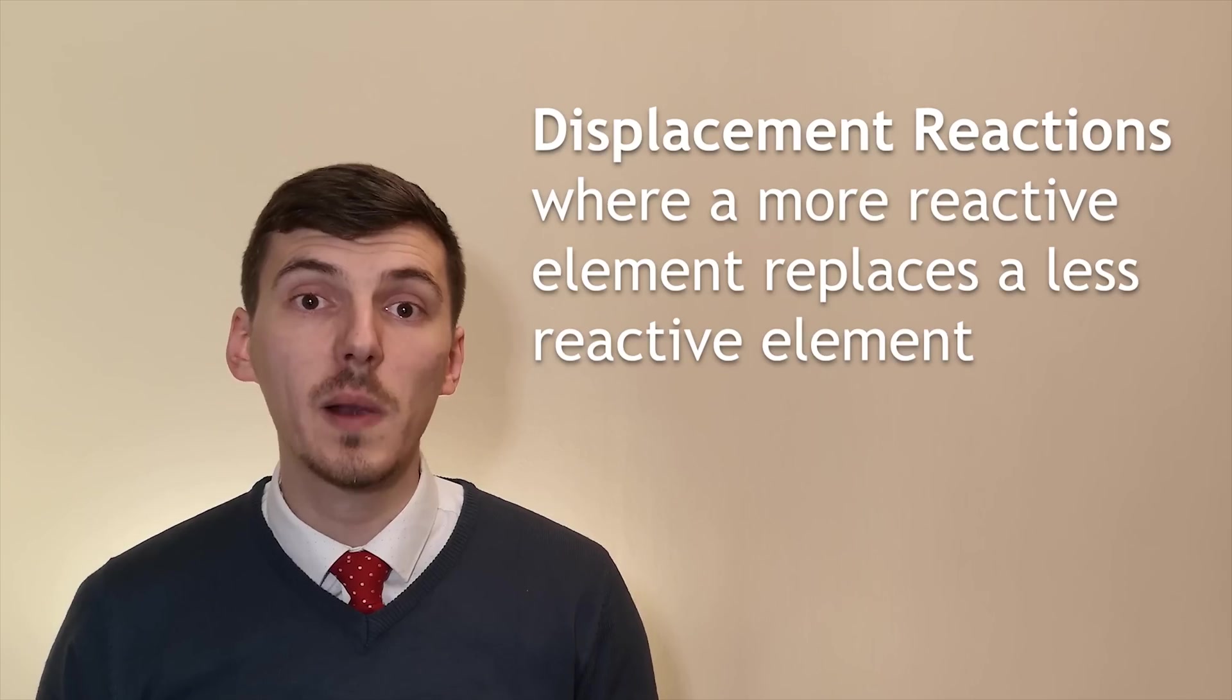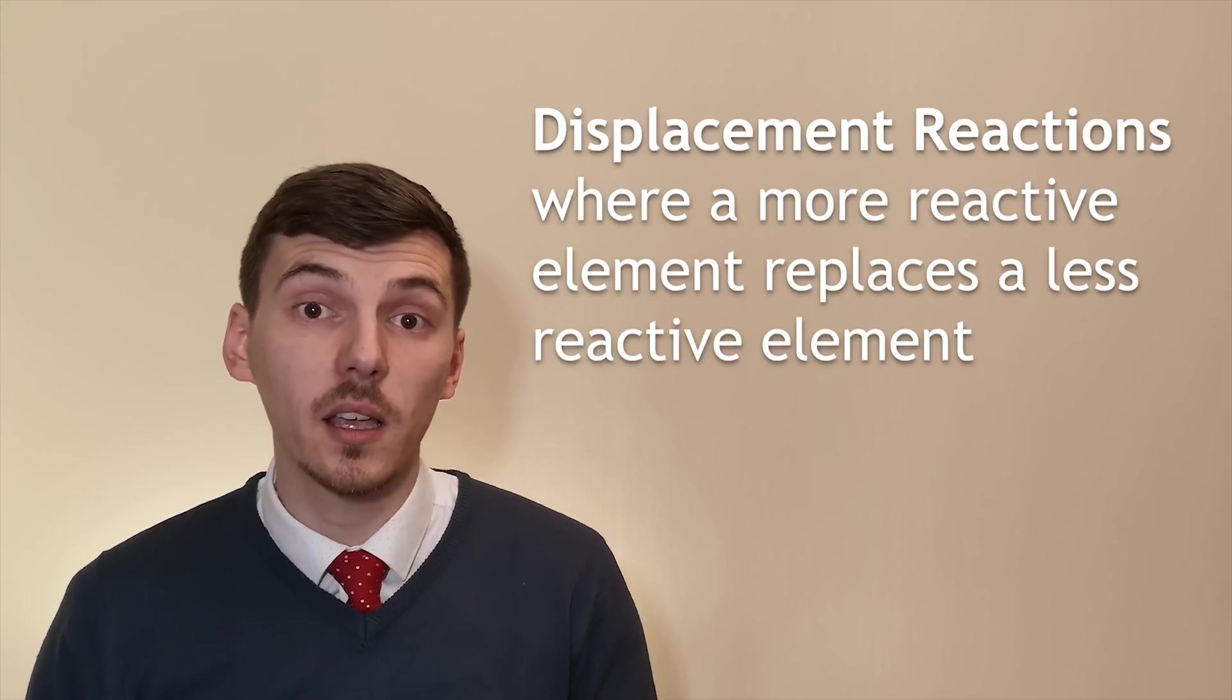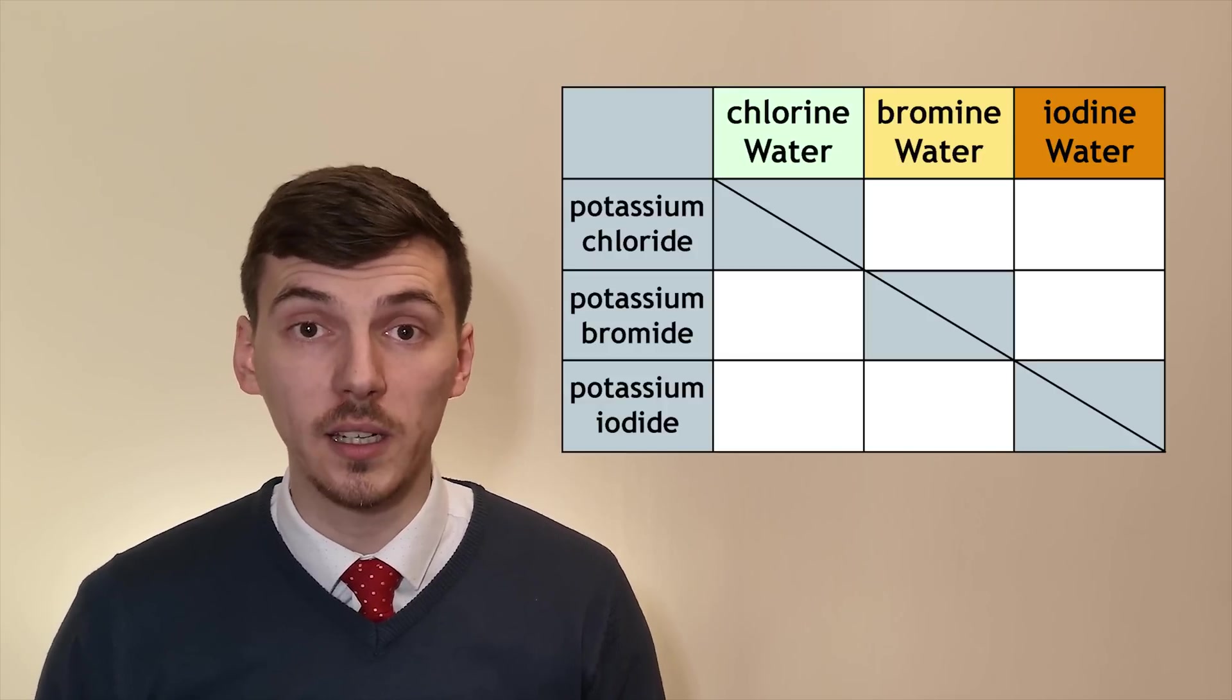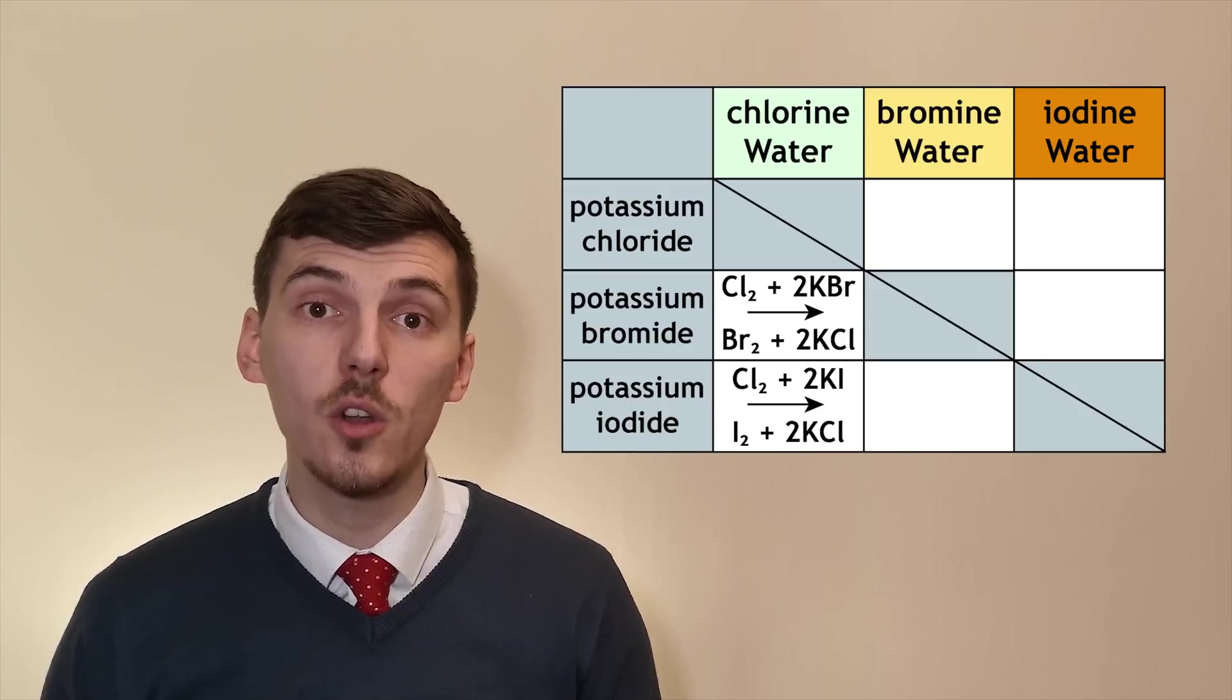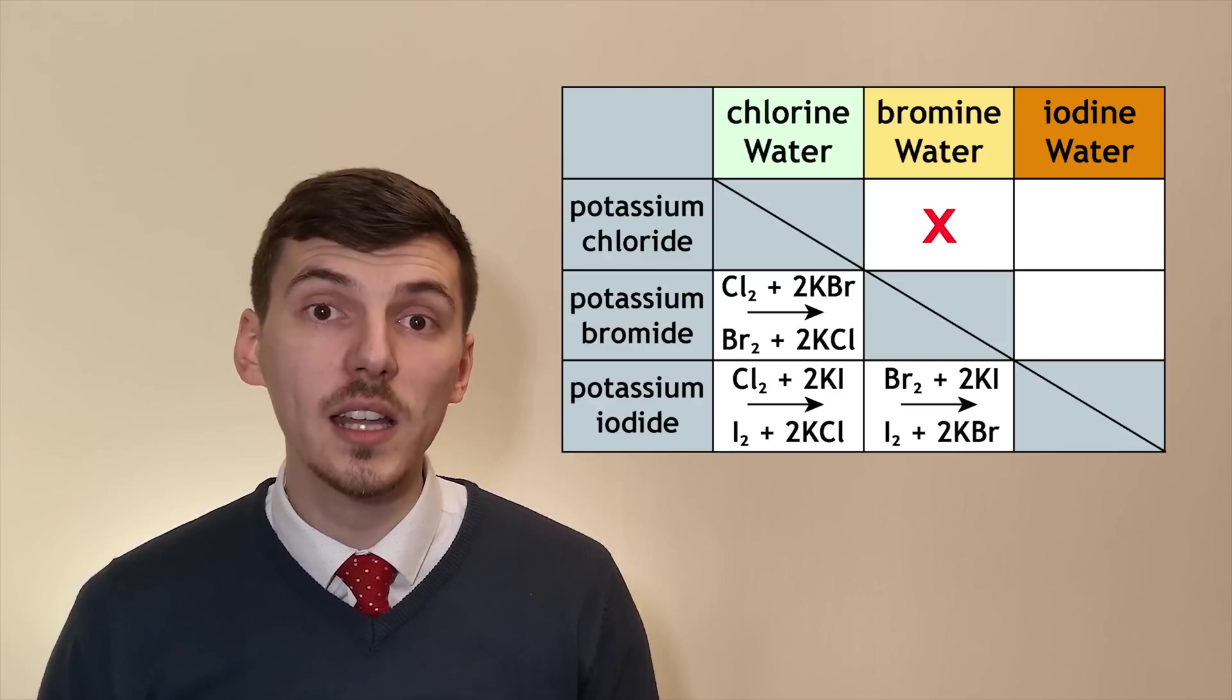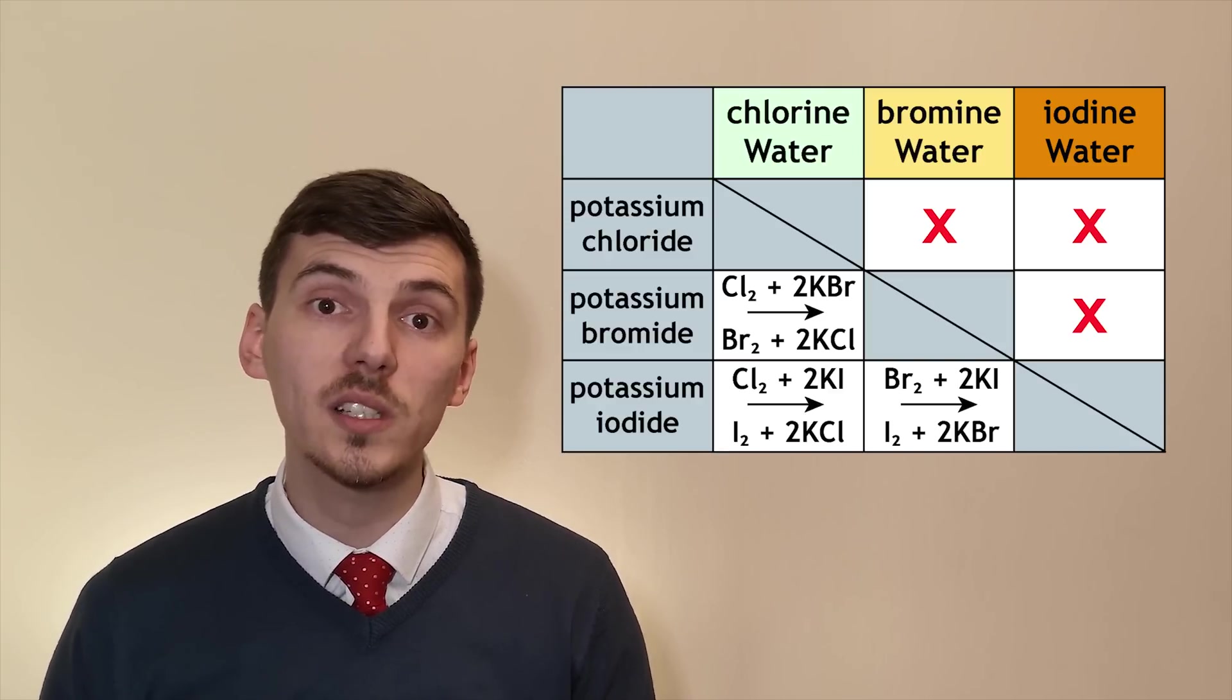We can see this pattern of behavior by doing displacement reactions. Displacement reactions involve a more reactive element either kicking out or displacing a less reactive element. We can complete a practical by using dissolved ions of chlorine, bromine and iodine to demonstrate how this works. Because chlorine is more reactive than both bromine and iodine it will displace both of them from their compounds. However bromine is not more reactive than chlorine so we'll only be able to displace iodine. Iodine is less reactive than both chlorine and bromine so when we add it to our solutions we see no change.